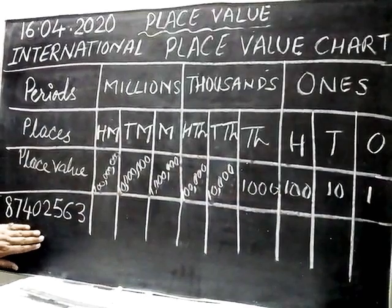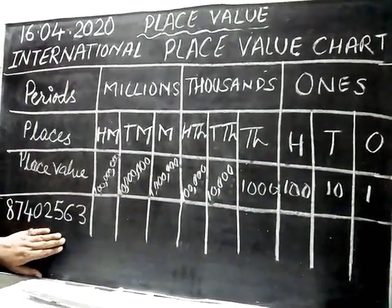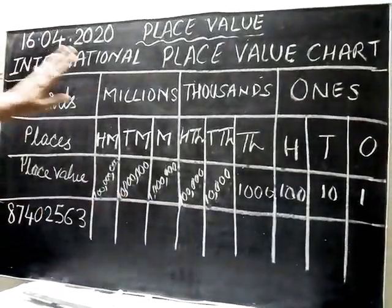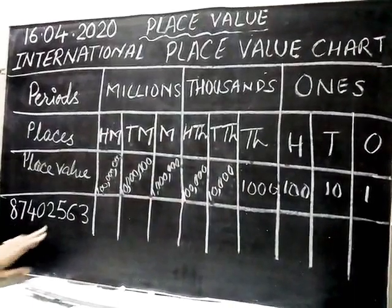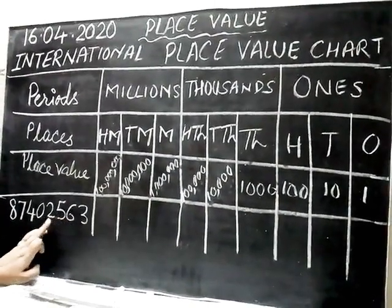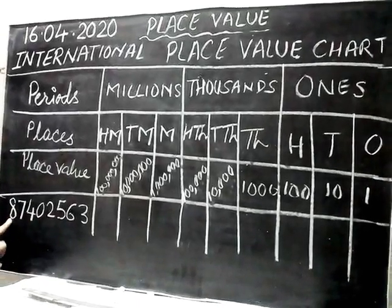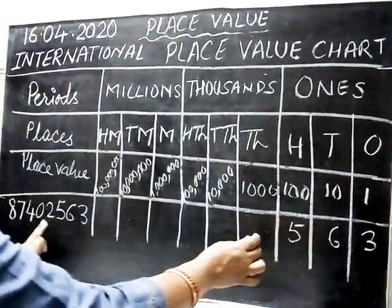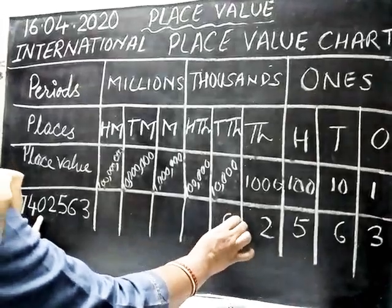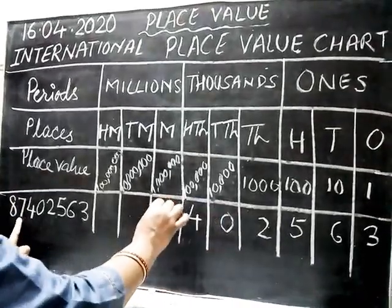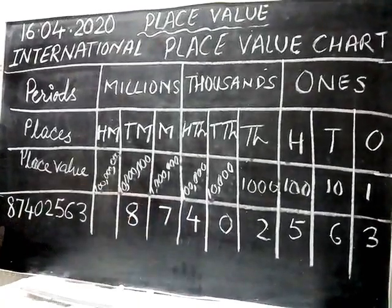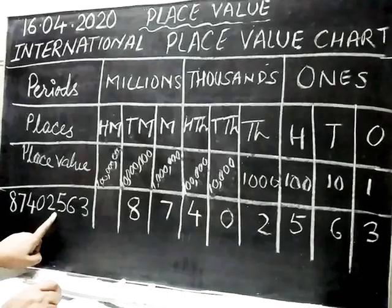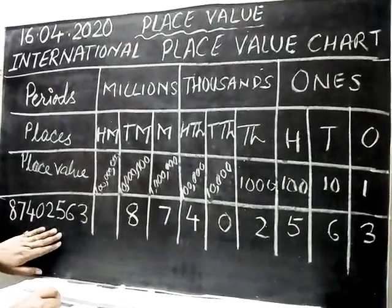Now let us see how we are going to name numbers. I have taken an example of an 8-digit number and we will place each digit below its correct place. So the places are: ones, tens, hundreds, thousands, ten thousands, hundred thousands, million, ten million. The number has: 3 in ten millions, 8 in millions, 4 in hundred thousands, 0 in ten thousands, 2 in thousands, 5 in hundreds, 6 in tens, and units. Now according to their period, we put commas.